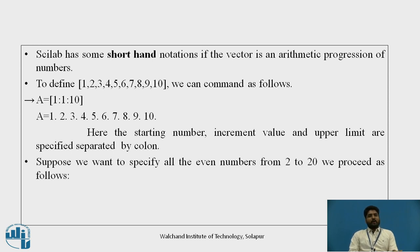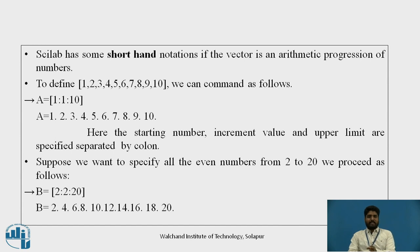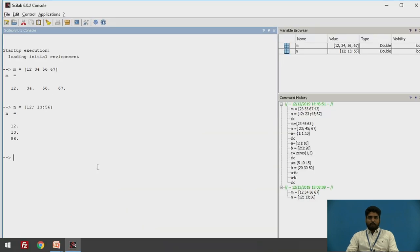Suppose you want to specify all even numbers from 2 to 20. The command would be 2:2:20 — the first 2 is for the first number, 20 is the last number, and the increment is 2. So you get the output as 2, 4, 6, 8 and so on.